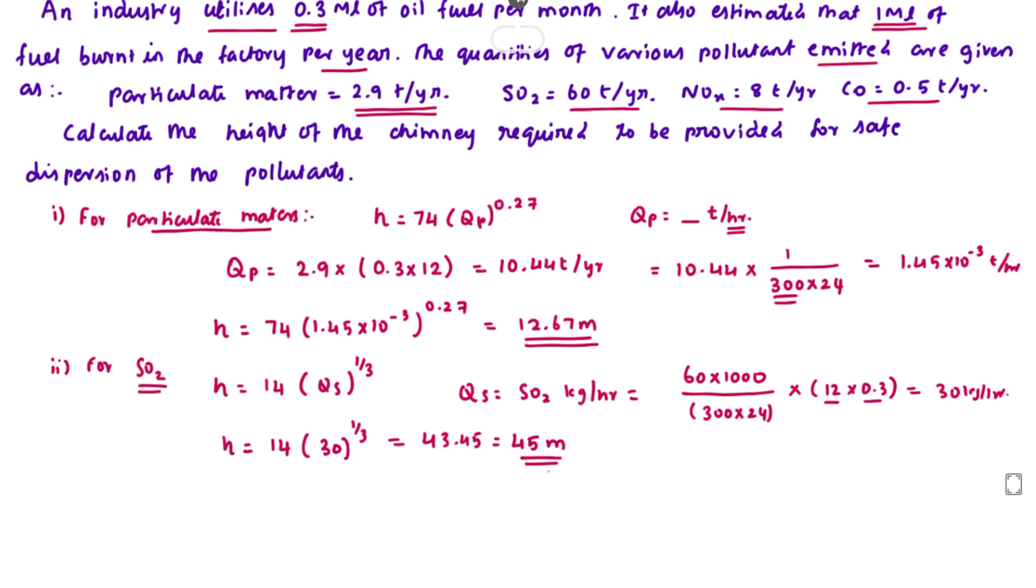Since the concentration of NOx and CO are generally much less than the SO2 emission, these pollutants need not be considered for the chimney height, so these are ignored values. The 45 meter is the final answer. This is the method we can solve the problem. We will see you in the next video, thank you.